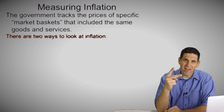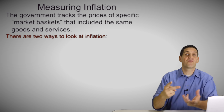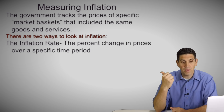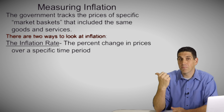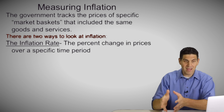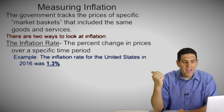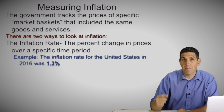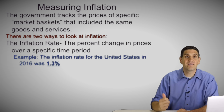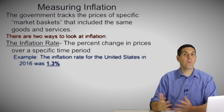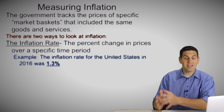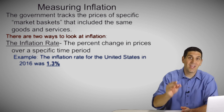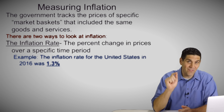There are two ways the government — or any of us — looks at inflation. The first one is the inflation rate, which shows you the percent change in prices over a specific period of time. For example, in 2016 the inflation rate was 1.3%, meaning prices went up 1.3% in 2016 relative to 2015. So a percent change is the idea of the inflation rate.